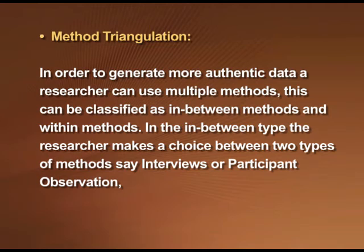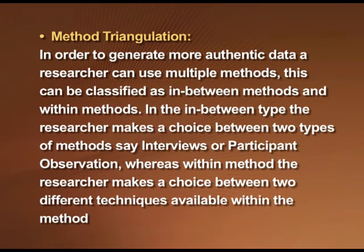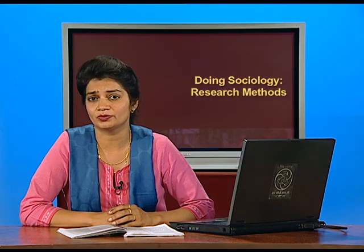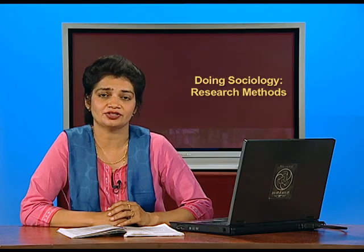In the in-between type, the researcher makes a choice between two types of methods, such as interviews or participant observation. Whereas within the method, the researcher makes a choice between two different techniques available within a method — for example, within interviews choosing between structured or unstructured interviews, and within participant observation deciding between overt and covert participation. Similarly, there can be researcher triangulation and theory triangulation as well.